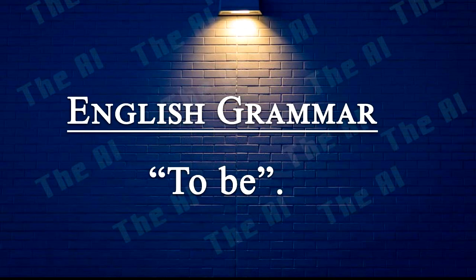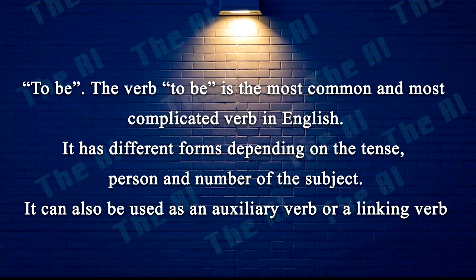English grammar: to be. The verb to be is the most common and most complicated verb in English. It has different forms depending on the tense, person and number of the subject. It can also be used as an auxiliary verb or a linking verb. Here are some examples of the verb to be in different tenses.